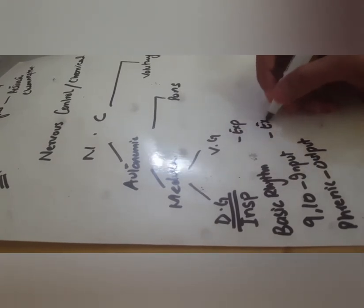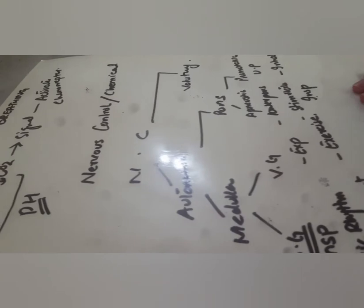The ventral group helps in expiration and activates during exercise. In the pons, we have two centers: the apneustic center, present in the lower pons, which stimulates inspiration; and the pneumotaxic center, present in the upper pons, which inhibits inspiration. Voluntary control is by the cerebral cortex, which leads to hyperventilation.